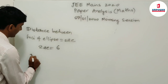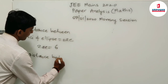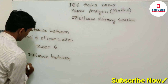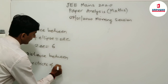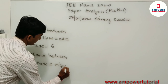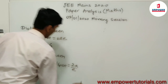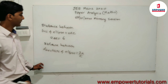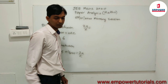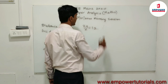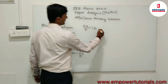Next, the distance between the directrices of an ellipse is given as 2A upon E. So what is given is that 2A upon E is equal to 12. This is equation 1 and that is equation 2.